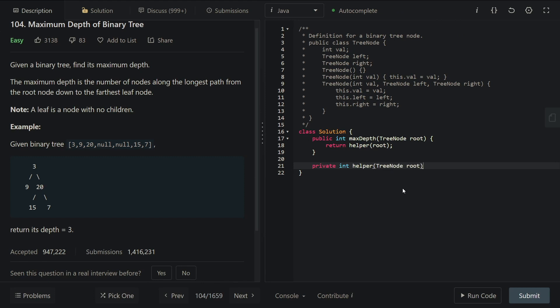All right, so in this case, we're just defining the base case, checking if the root is equal to null. That is true, we're just gonna go ahead and return zero back.